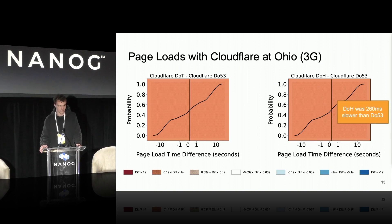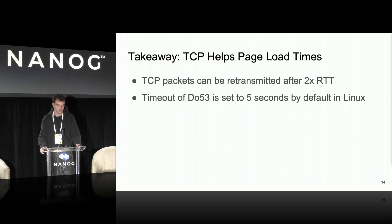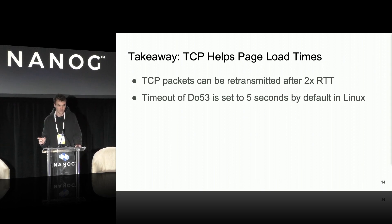The key takeaway is that it's not necessarily the case that using DOT or DOH will worsen performance — under certain network conditions you might actually observe faster performance. This was a really unexpected finding. The most likely explanation we arrived at is retransmission times with TCP compared to UDP. TCP packets could be retransmitted within two round trip times, whereas for DO53 the timeout is set to five seconds by default in Linux with resolv.conf. As you get into lossier network conditions, packets retransmitting faster over TCP may help the performance of DOT and DOH in page load times, despite higher DNS response times.